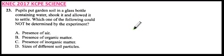23. Pupils put garden soil in a glass bottle containing water, shook it, and allowed it to settle. Which one of the following could not be determined by the experiment?